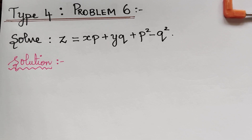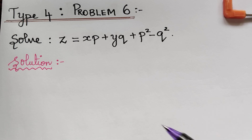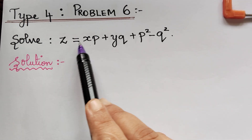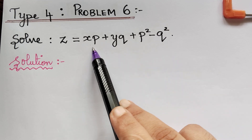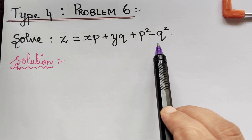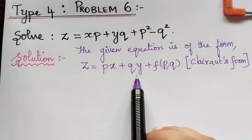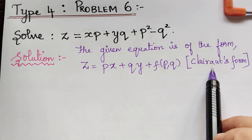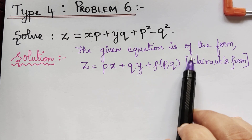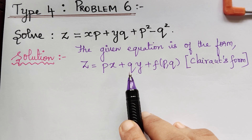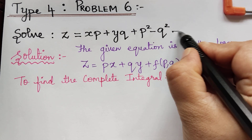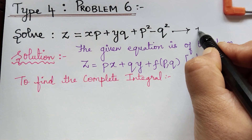Dear students, under the topic nonlinear partial differential equations, we are solving problems under type 4. The question is z = xp + yq + p² - q². The given equation is of the form z = px + qy + f(p, q), which is the Clairaut form. In order to solve this kind of equation, we have to first find the complete integral. Let us mark the given equation as equation 1.